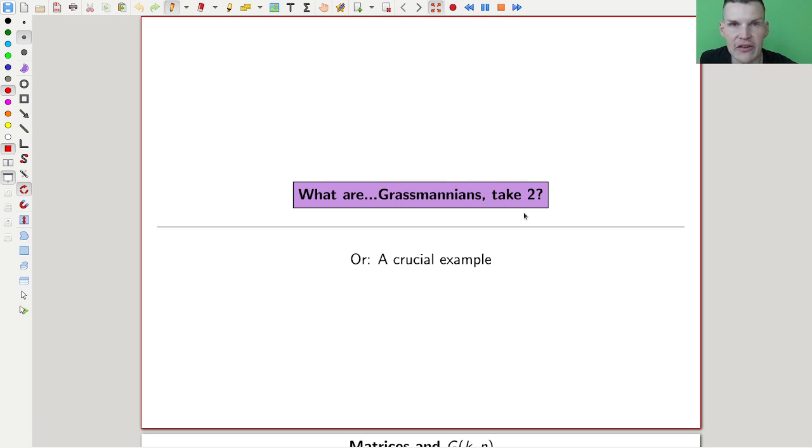Okay, welcome everyone to this continuation of what is algebraic geometry. Today I would like to talk about the Grassmannian again because it's such an important example. It's an unbelievably important example, non-trivial and still very crucial.